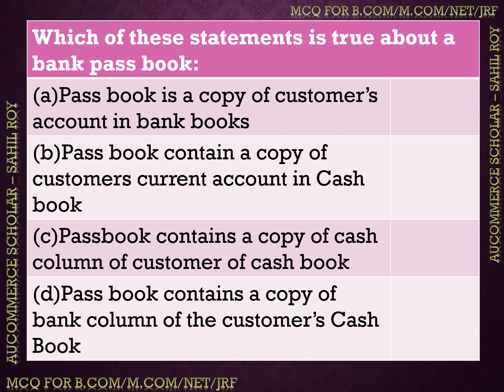Next question: which of these statements is true about a bank passbook? Options: (A) passbook is a copy of customer's account in bank books, (B) passbook contains a copy of customer's current account in cash book, (C) passbook contains a copy of cash column of customer's cash book, (D) passbook contains a copy of bank column of customer's cash book. The correct answer is option A — a bank passbook is a copy of the customer's account in the bank's books.